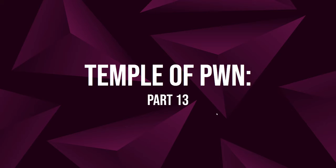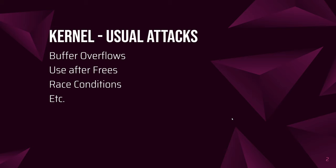Welcome to Temple of Pwn. This week we'll be talking about kernel exploitation. Usual attacks on the kernel include buffer overflows, either stack or heap based, use-after-free, and race conditions. There are probably more out there and many come and go. It could just be crappy programming or a missed edge case. But these are the usual ones people find in the real world or in competitions.